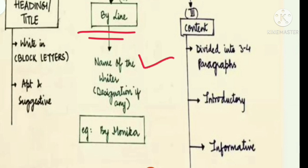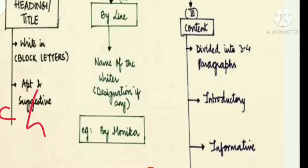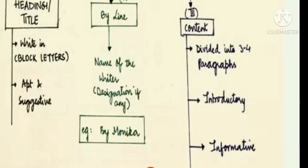Let's move towards the second element, which is the byline. In the byline, you have to write your name. Keep in mind that we write articles for both school magazines and newspapers. When writing for a school magazine, you must mention your name, class, and section — these three things are required for a school magazine.